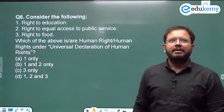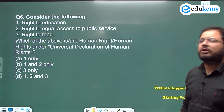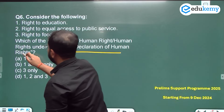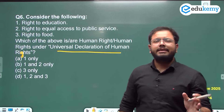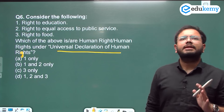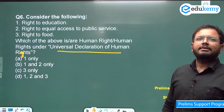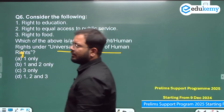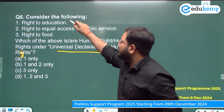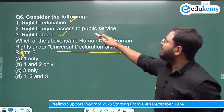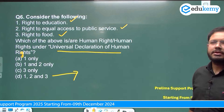Question number 6: Which of the following are human rights under the Universal Declaration of Human Rights? UPSC generally wants you to go with the broader option, since UDHR declares rights at the universal level for all countries. Right to education — yes. Right to food — yes. Right to equal access to public service — yes. Always go with the broad and positive option. Answer is D.